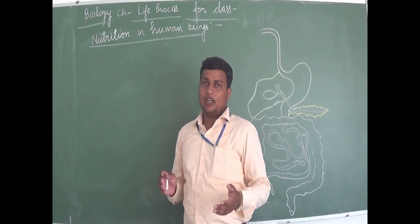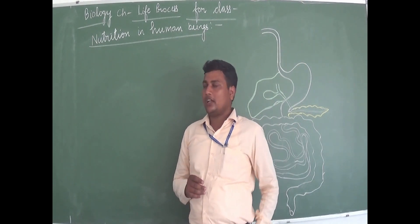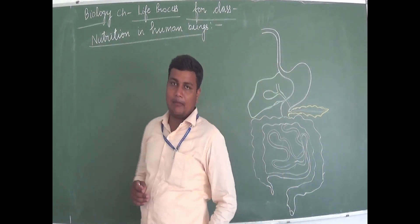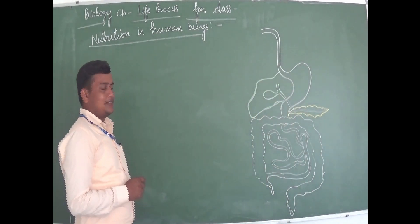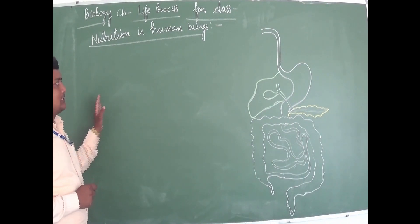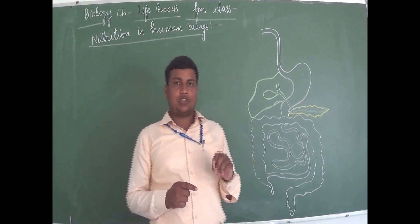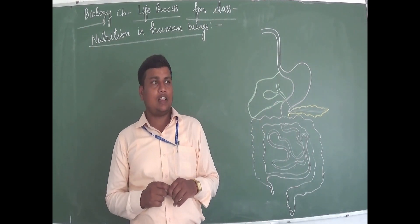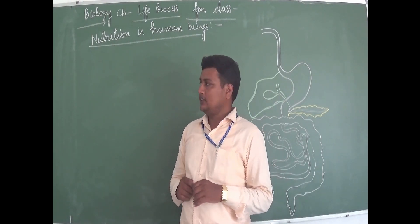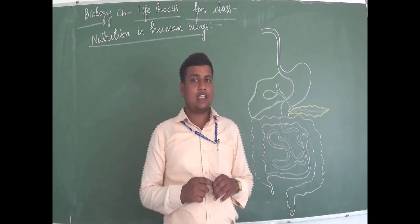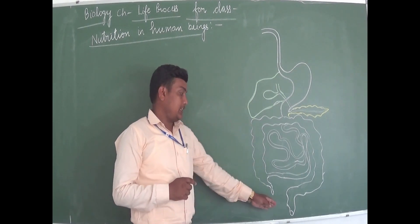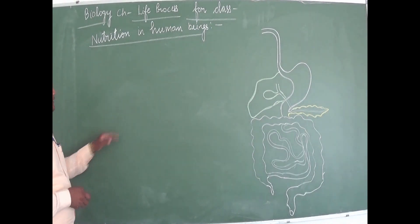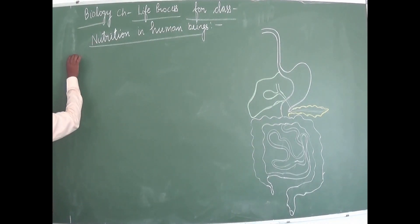Now, very importantly, nutrition in human beings: human beings have a well-developed digestive system. The digestive system is composed of the alimentary canal and associated glands. The alimentary canal in human beings is a long, coiled structure. We start with the mouth and end with the anus.